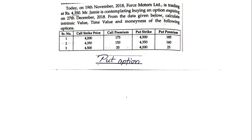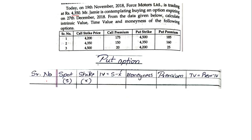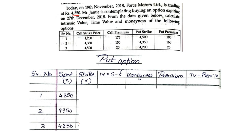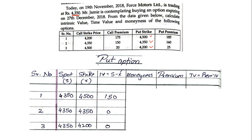For put option the table remains the same: serial number, spot, strike, IV, moneyness, premium, and time value. Serial numbers are 1, 2, 3. Spot is again 4350 for all cases. Strike prices are 4500, 4350, and 4200. Now remember this carefully — for put option it is exactly opposite. If your spot is less than your strike, IV will be positive. If equal, zero. If your spot is more than your strike, it's a loss so IV is zero again. In our case 4350 is less than 4500, so IV is positive 150; equal gives zero; and the last is zero.